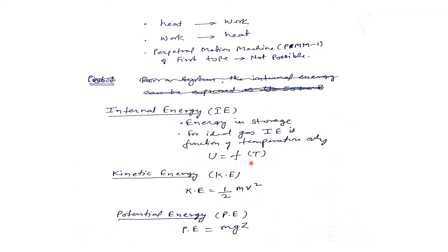The second form of energy is kinetic energy, which is due to the virtue of motion. When a particle is in motion, it possesses kinetic energy. Kinetic energy can be expressed as KE = ½mv², where m is the mass of the particle and v is its velocity.